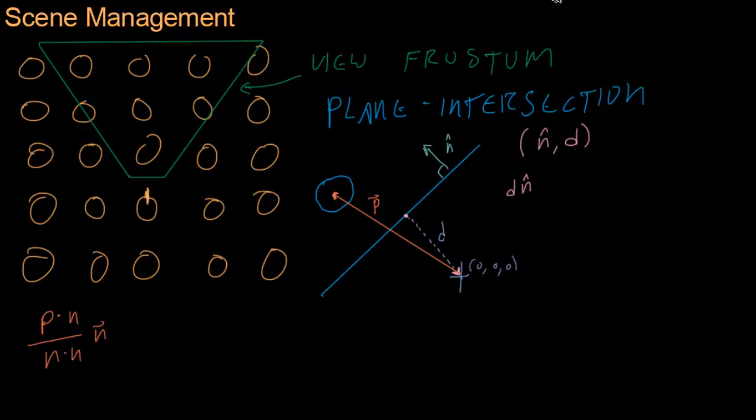That is p dot n over n dot n times n. These are all n hats, and this p is a vector. Now, you've seen this projection algorithm before. I think this is actually the third time we've done it. And you really should memorize this because it comes up all the time in game development. It's not hard. p dot n over n dot n times n to project a vector onto n.